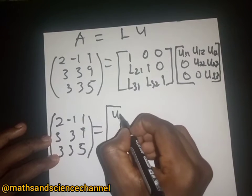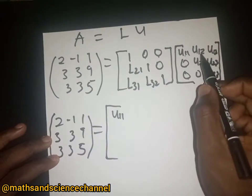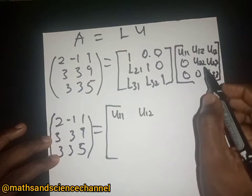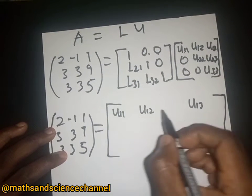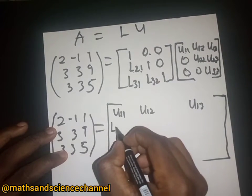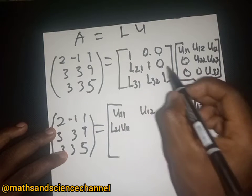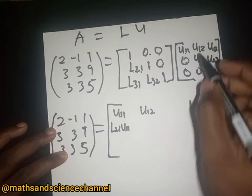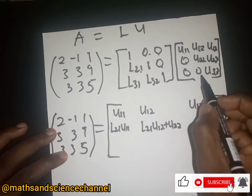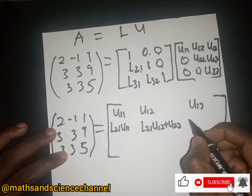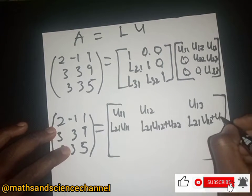From the first row: 1 multiplies U11, giving U11; 1 multiplies U12, giving U12; and 1 multiplies U13, giving U13. From the second row: L21 multiplies U11 gives L21·U11; then L21·U12 plus U22; and L21·U13 plus U23.